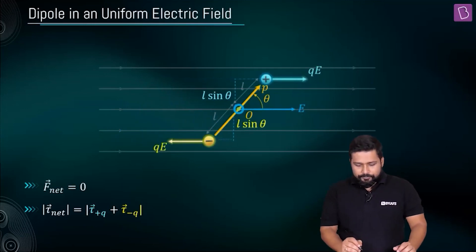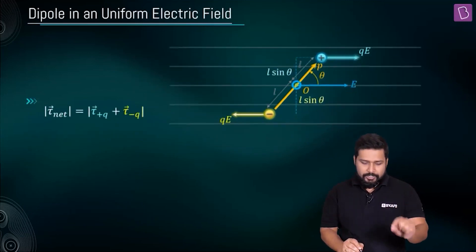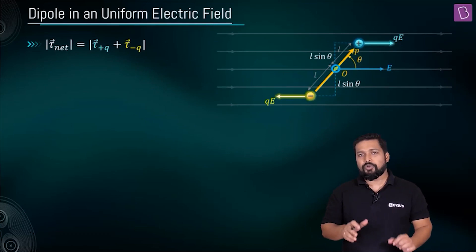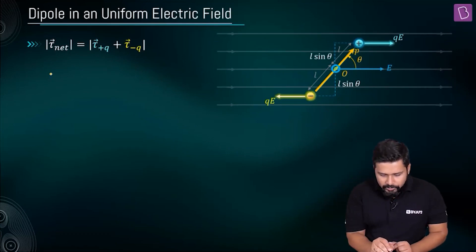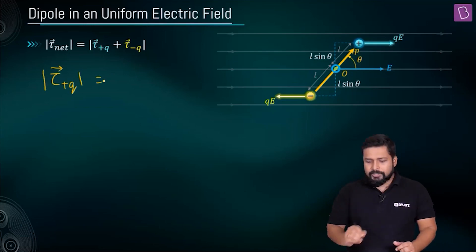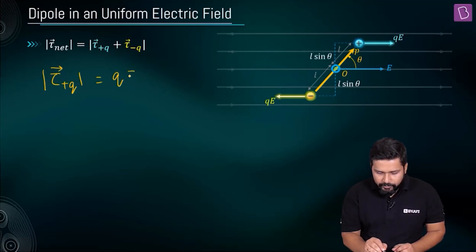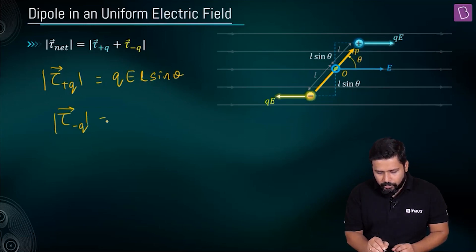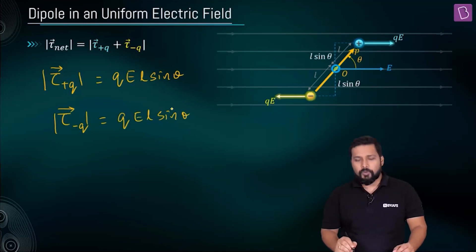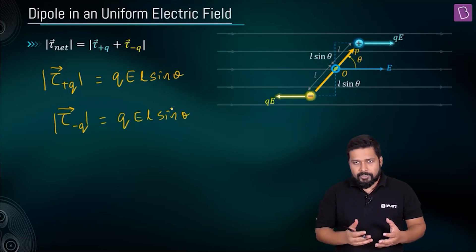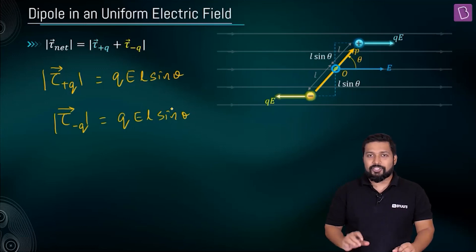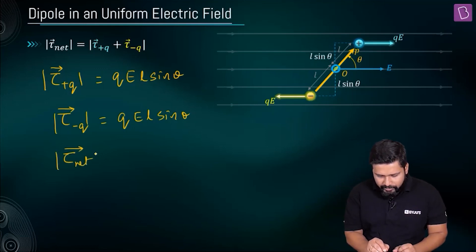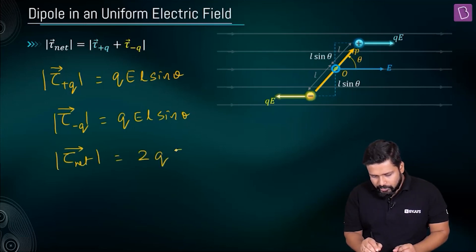We have to find out the net torque — the torque due to the positive charge plus the torque due to the negative charge. Since the sense of rotation due to both torques is in the clockwise direction, we can add them. The magnitude of torque because of plus Q is equal to Q times E times L times sinθ. The magnitude of torque on minus Q is going to be equal to QEL sinθ. The net torque is the summation of both, and since they are oriented along the same direction, the magnitude of the net torque is equal to 2QEL sinθ.